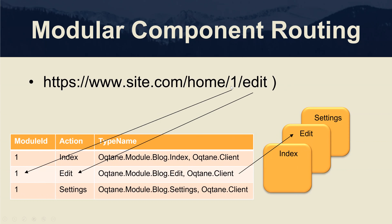The first segment, which is the number one, corresponds to a module ID by convention. It's going to find the home page which is part of my site and recognize that there must be a module on that home page with a module ID of one. The 'edit' keyword is an action, and that action corresponds to a type name of a component. It uses the module ID and action name to come up with a corresponding type name, which it then instantiates dynamically and renders within the user interface.